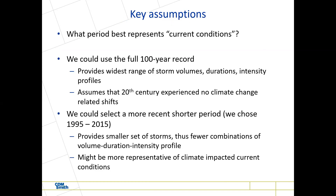We could use the full 100-year record, which gives a wider range of storm volumes, durations, and intensities. But that assumes the 20th century experienced no climate change-related shifts. If you're interested in current conditions — the last 10 or 20 years — that may not give the right statistics. We used the 20-year period, 1995 through 2015, which had over 2,000 storm events. Fewer storms, but still quite a representative combination, and more representative of climate-impacted current conditions.